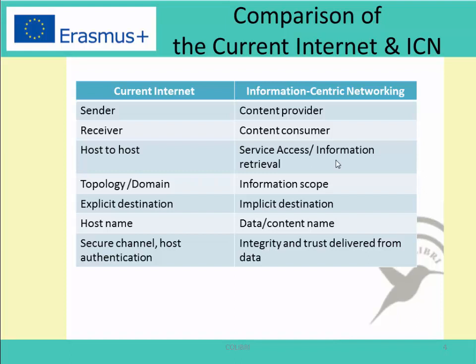In the current internet you have an explicit destination because you know where you transfer the data to. But in information-centric networking it's an implicit destination because mobility is a built-in feature of ICN — users may move from one place to another and the destination is no longer physical. Instead of a host name in the current network, in ICN we don't care about the host; we have the data or content name, which is a named object. And in the current internet we secure the channel, but in ICN the data itself is secured, not the communication channel.